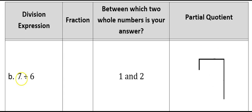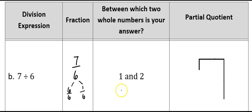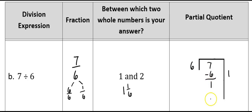Here I have the problem 7 divided by 6, which as a fraction is 7 sixths. It falls between the whole numbers 1 and 2. I can think of 7 sixths as 6 sixths — which equals 1 — plus 1 more sixth, so the answer is 1 and 1 sixth. Working it as a partial quotient: I take 1 group of 6 out of 7, leaving 1 whole. Then 6 times 1 sixth equals 6 sixths, which equals 1 whole — subtract that, nothing left over. Combining gives a quotient of 1 and 1 sixth.